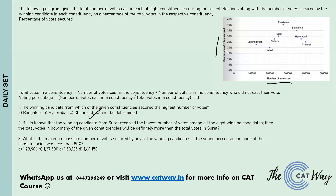Question two says: if the winning candidate from Surat received the lowest number of votes among all eight winning candidates, then total votes in how many of the given constituencies will definitely be more than Surat? We have to be sure that the total votes in the constituency is definitely more than total votes in Surat.